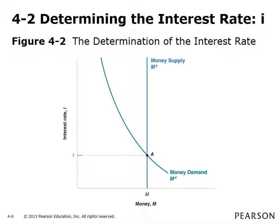In Figure 4.2, the money supply curve is vertical, showing it does not depend on the interest rate. The money demand curve is a negative function of the interest rate. Equilibrium occurs at point A where the money supply and money demand curves intersect, and the equilibrium interest rate is given by i.